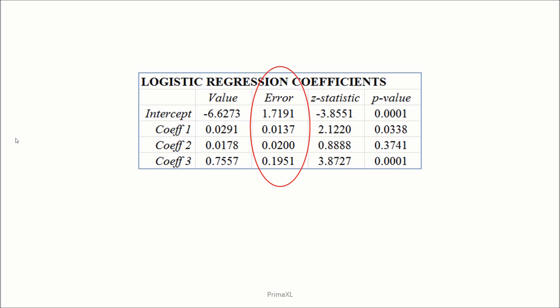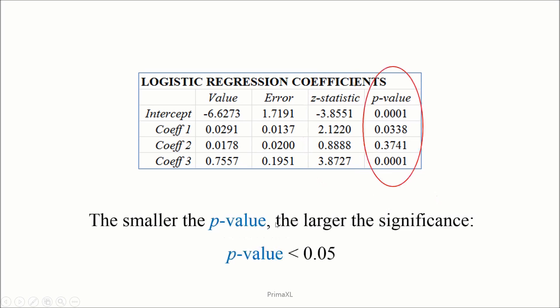In the next column, we have the z-statistics, which are calculated by dividing the coefficient value by the error. In the last column, we have the p-values.